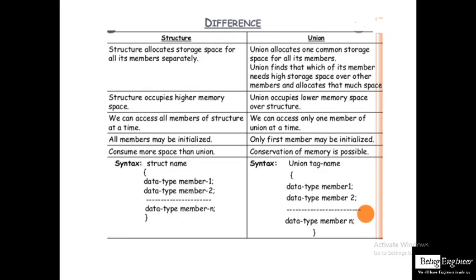We can access all members of a structure at a time, but in union we can access only one member at a time. In structure, all members may be initialized, but in union only the first member may be initialized. Structure consumes more space, while union only needs the memory of the member requiring the highest storage. The syntax difference is: structure uses the 'struct' keyword while union uses the 'union' keyword.